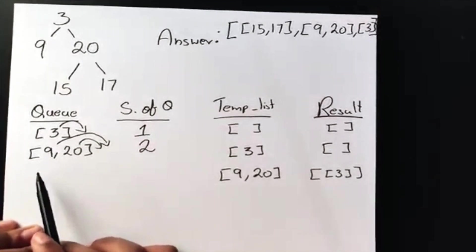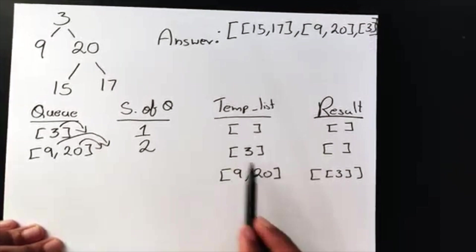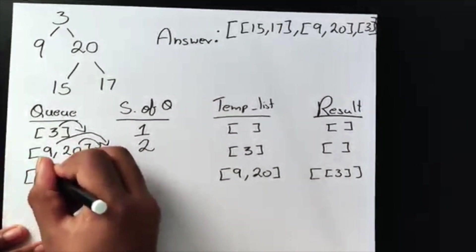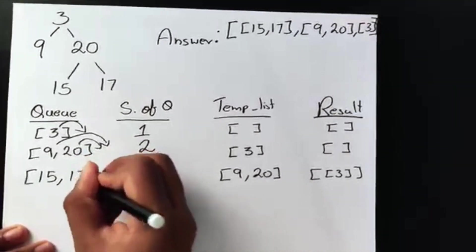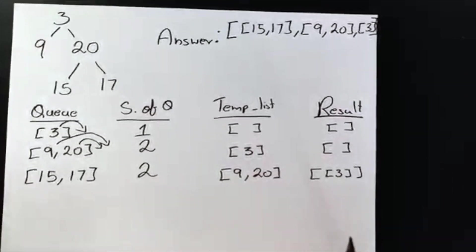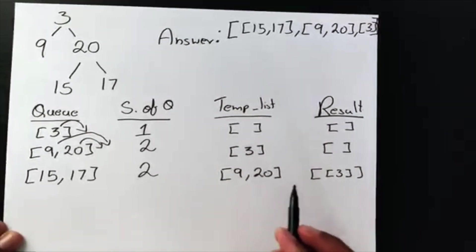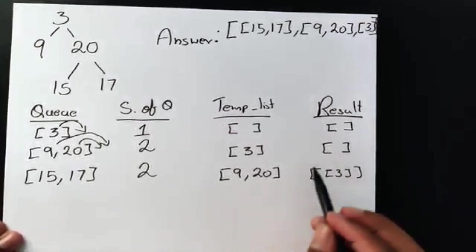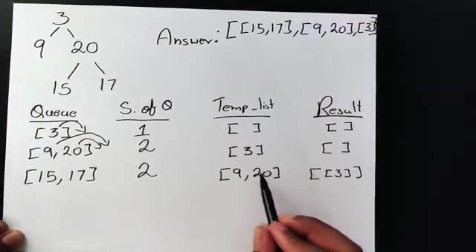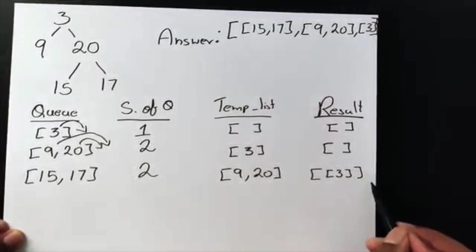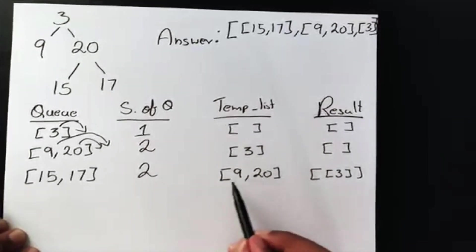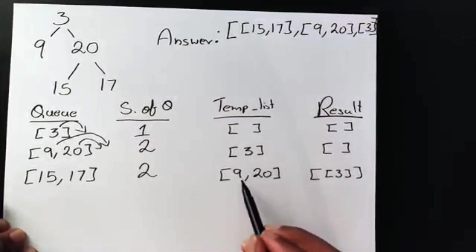Node 9 does not have any children, so we don't queue anything. Node 20 does have children: 15 and 17, so we add those to the queue. Now the size of the queue stays at 2. We're going to add 9 and 20 to our results, but instead of appending — which would place it after 3 — we need it before 3.